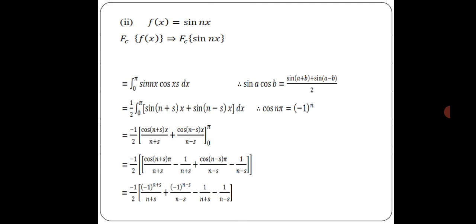For the second one, f(x) = sin(nx). The formula gives fc{sin(nx)} = integral from 0 to π of sin(nx) cos(sx) dx. Applying the product-to-sum formula: sin(a)cos(b) = [sin(a+b) + sin(a-b)] / 2. This becomes (1/2) integral from 0 to π of [sin((n+s)x) + sin((n-s)x)] dx.